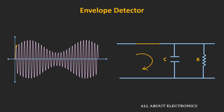After that, the input signal starts reducing. When the input signal is less than the voltage across the capacitor, the diode will get reverse-biased and will act as an open circuit. During this time, the capacitor starts discharging through this resistor, and if we see the output, it will look like this.